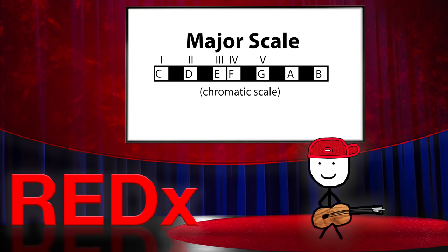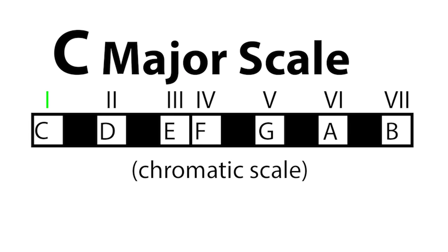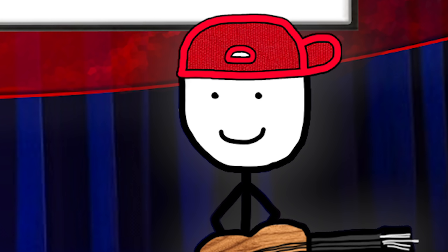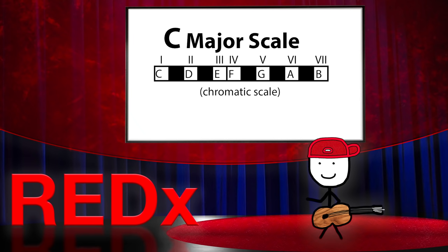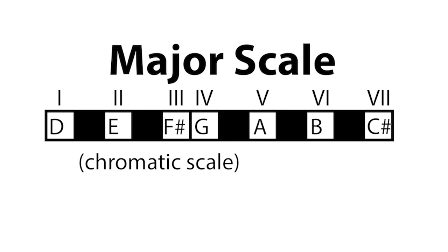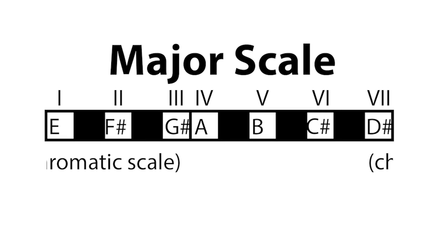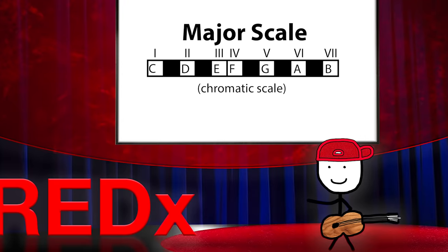Here's where things get crazy. A scale isn't actually a set of notes — it's a set pattern. All you do is plop it down on the chromatic scale, and whatever notes are left underneath are a major scale. Notice the Roman numerals up top. Whichever note is under Roman numeral 1 gives the scale its name — it's also called the root note. Trees grow from roots and so do scales.